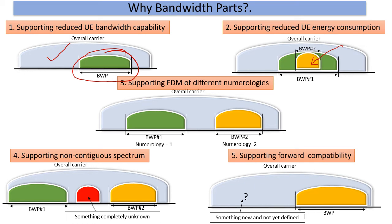5G NR also has different numerologies, potentially for supporting different applications. We could keep them isolated in a bigger bandwidth and accommodate non-contiguous bonding. We could even accommodate something which we do not know yet. Usually we talk about backward compatibility in a standard, but now forward compatibility to accommodate new things, which we learned as we evolved LTE. When we hit IoT, we did not quite have the plans for accommodating an IoT waveform smoothly in the LTE scheme of things. 5G wants to be prepared at a waveform level for handling this.